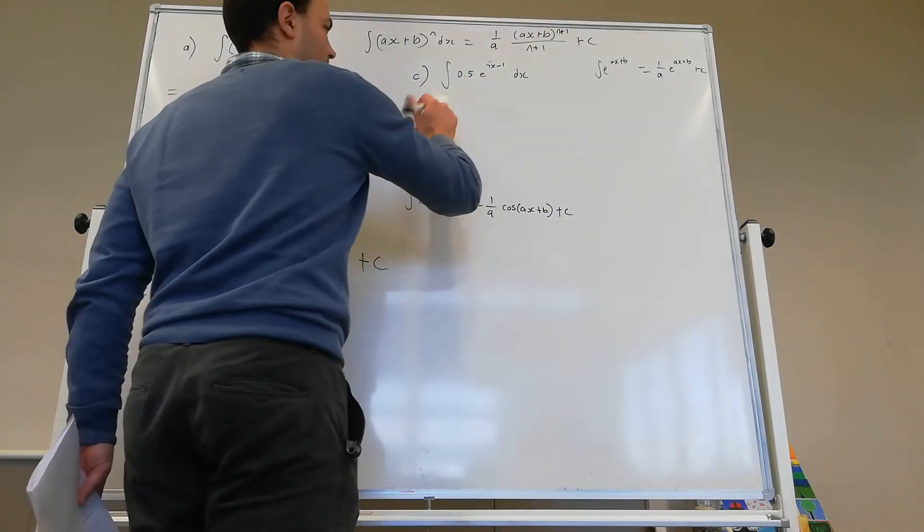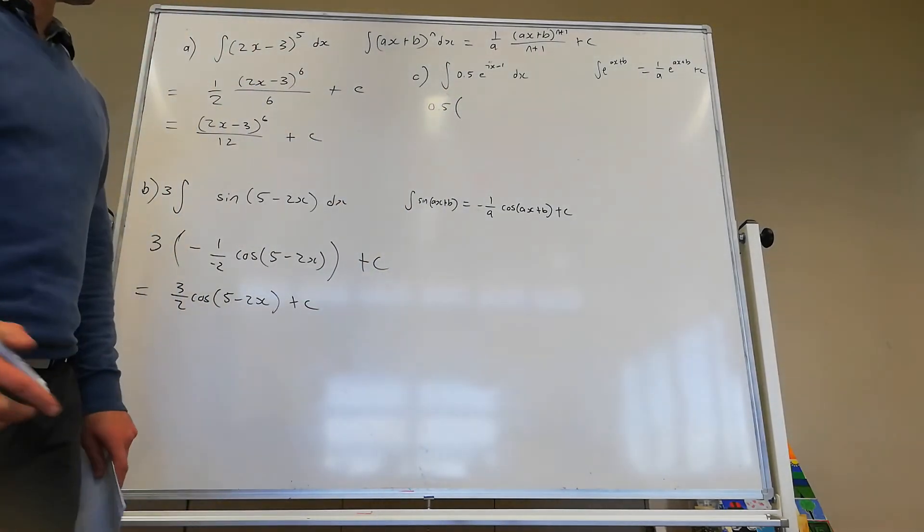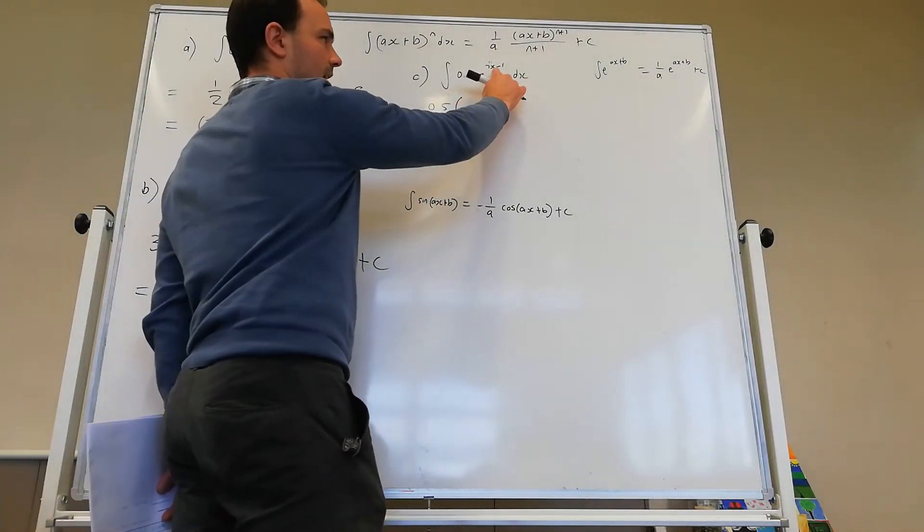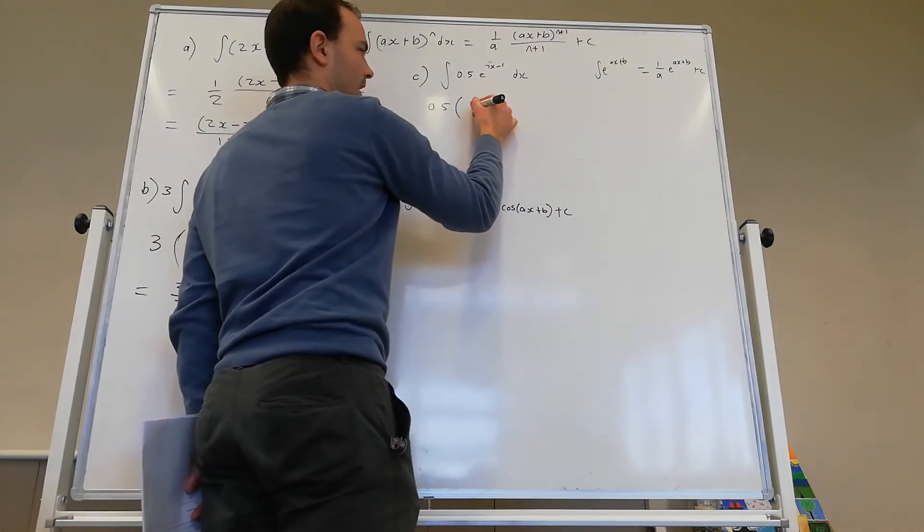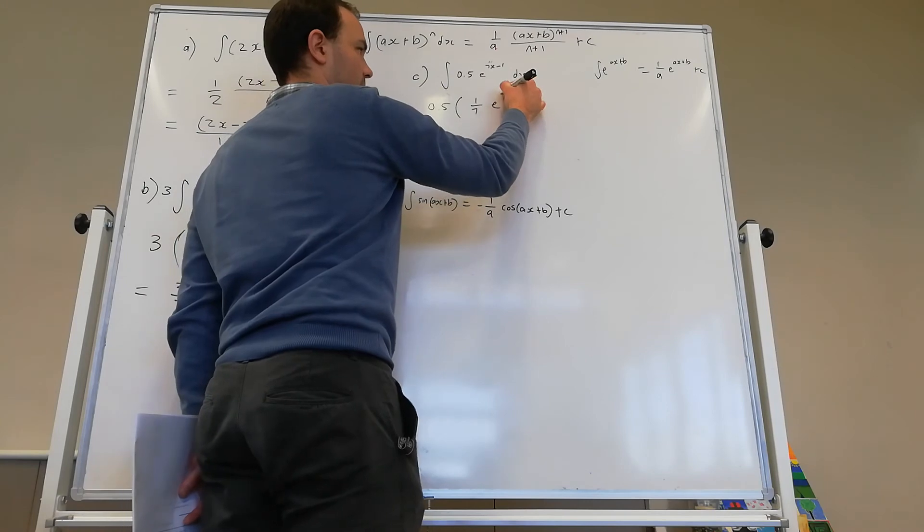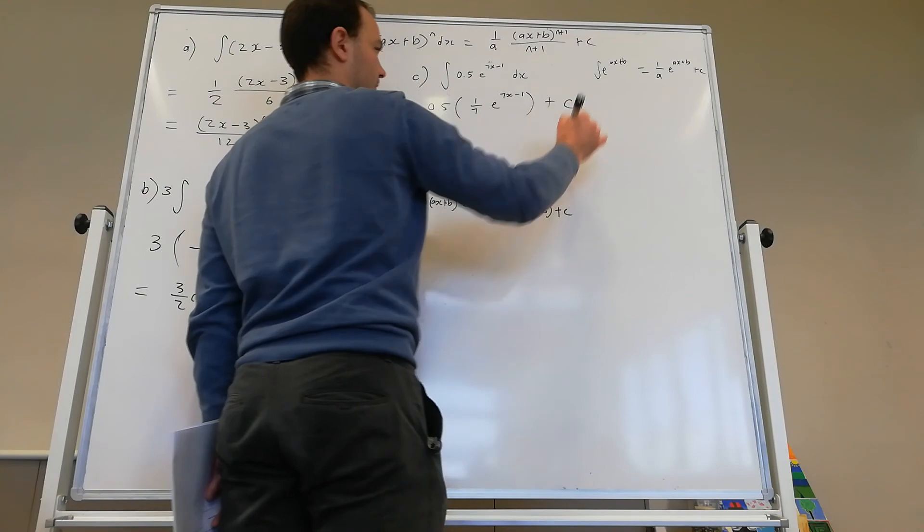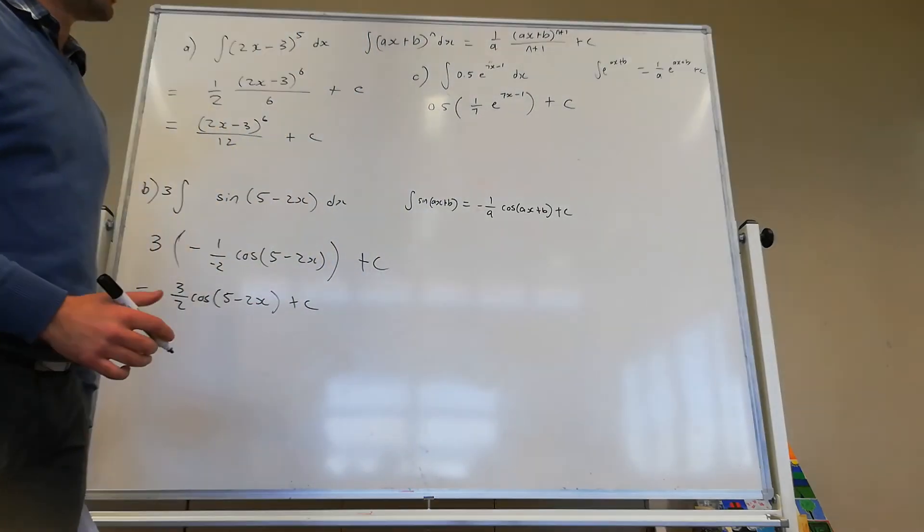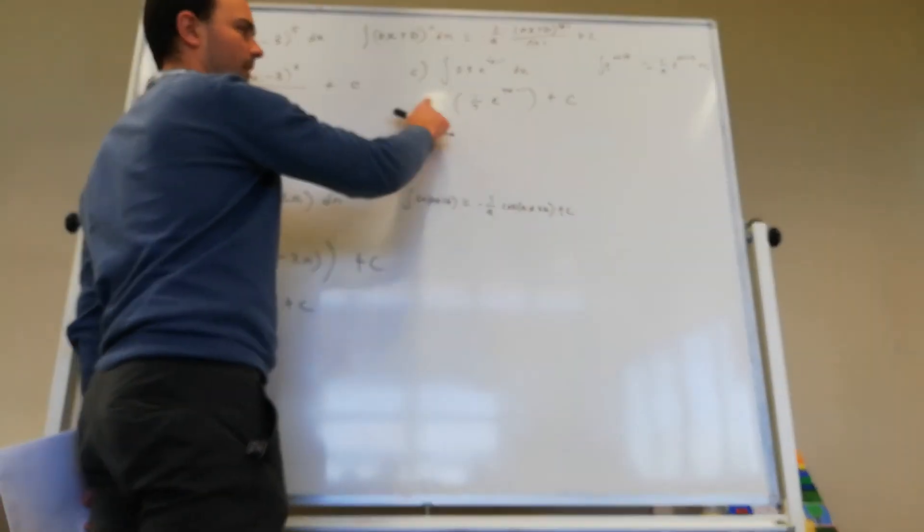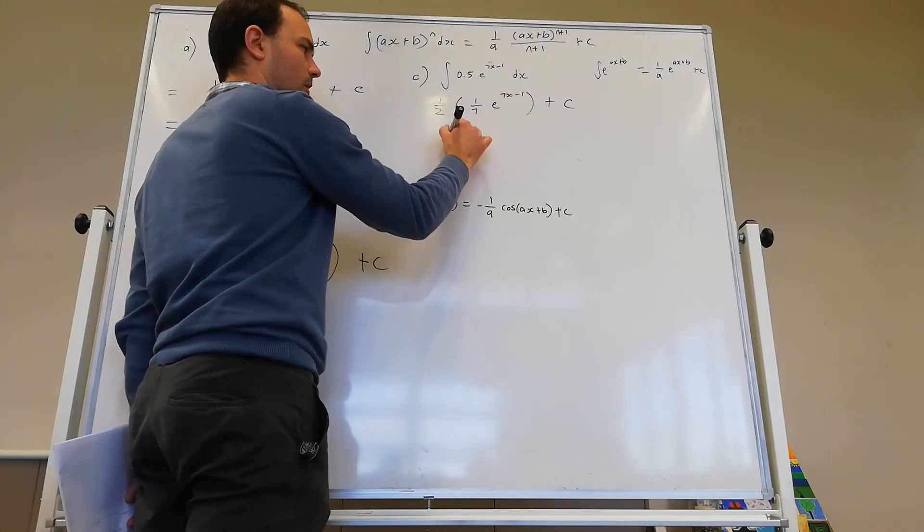And so again, that 0.5 can just hang out the front. So we've got 0.5 times... And the integral of e to the ax plus b is 1 on top of a. So we've got 1 on top of 7. And then e to the ax plus b. And then plus c. And if we were to simplify this 0.5, we can write as half. So we've got half times 1 on 7. That's 1 on 14.